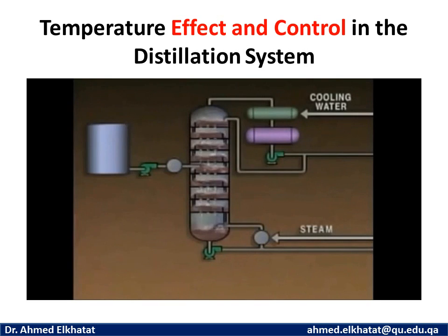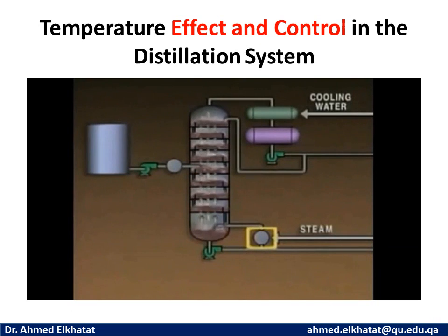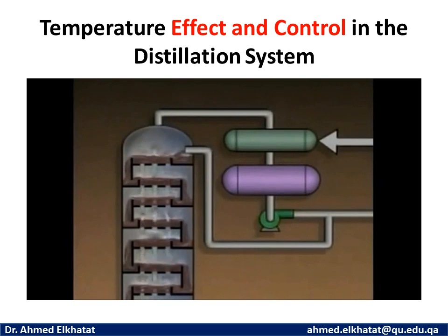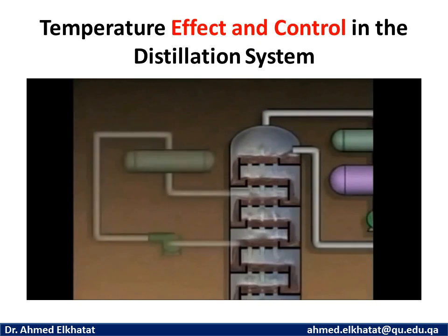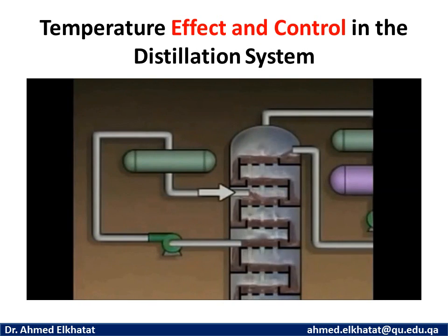One way to control temperature is to control the temperature of the feed mixture using a preheater, which regulates the temperature at the feed point. At the bottom of the tower, temperature is controlled by the amount of heat added by the reboiler, referred to as boil-up. The temperature at the top of the tower is controlled by the amount or temperature of the cool liquid pumped back into the tower from the overhead receiver, called the reflux rate. Increasing the reflux rate decreases the temperature at the top of the tower. Some distillation systems also contain equipment known as pump-arounds, which remove hot liquid from the tower, pump it through a cooler, and reintroduce it at a higher level to help control the temperature of the internal reflux.